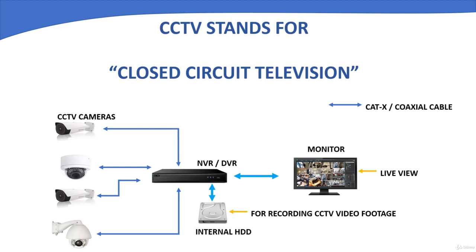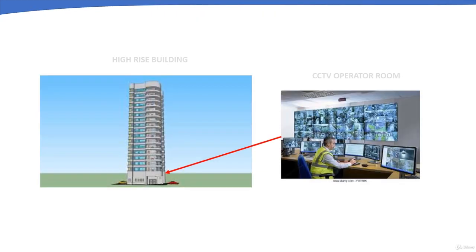For example, in a high-rise building, a security person can monitor all the floors or the area of interest by just sitting in front of a CCTV system, which increases the response of the security person in case of any emergency. The recorded videos can also be later used as evidence for legal purposes. In the next video, we will learn about the applications of CCTV systems.